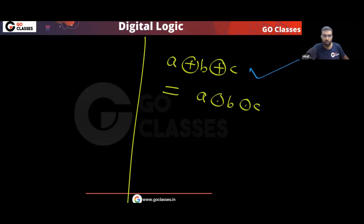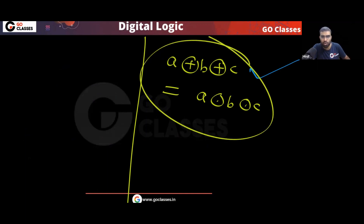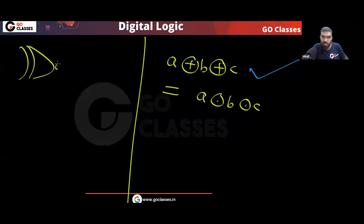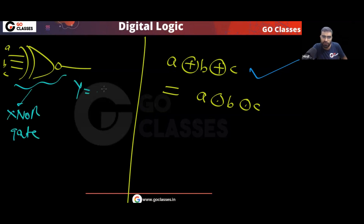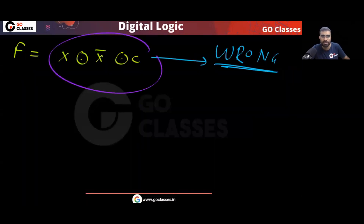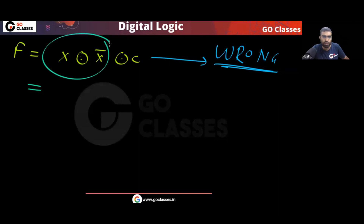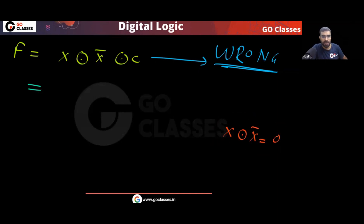Now if some students do it the wrong way — writing X XNOR X̄ — what will they get? X XNOR X̄ will be zero, because A XNOR B equals one if and only if both are the same. Since X and X̄ are always different, X XNOR X̄ equals zero. So then you have (0 XNOR C). Whatever C is, I am writing its complement — so this equals C complement.